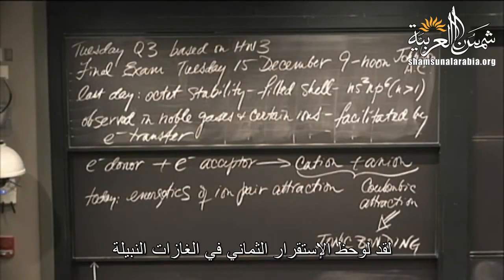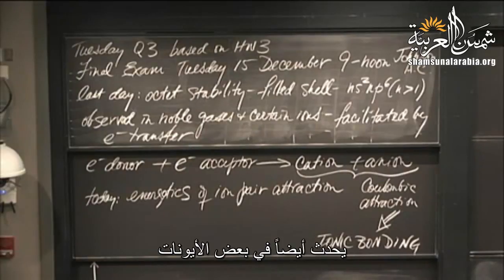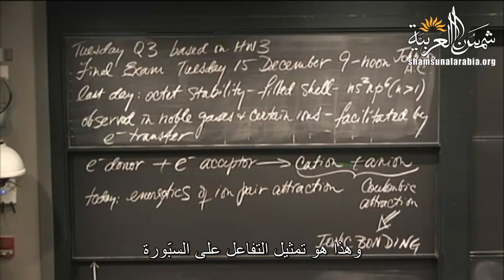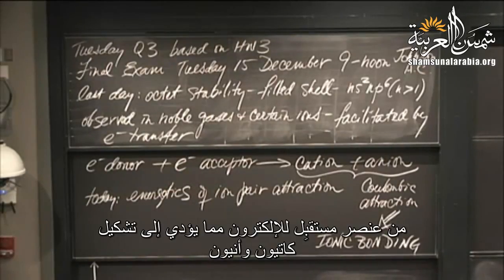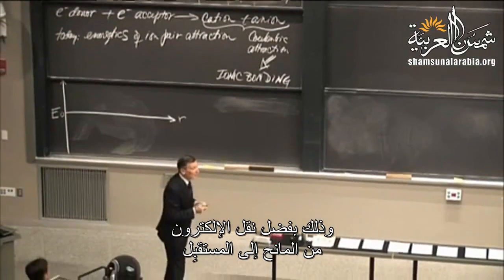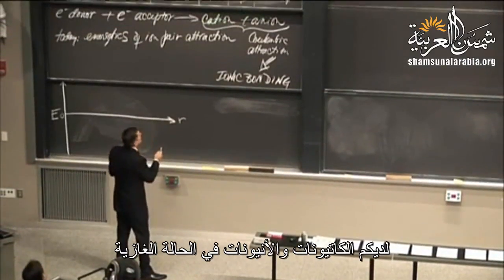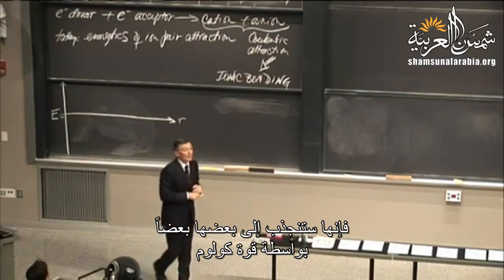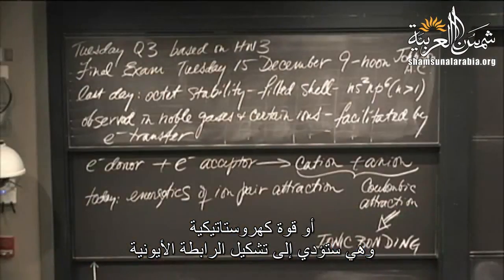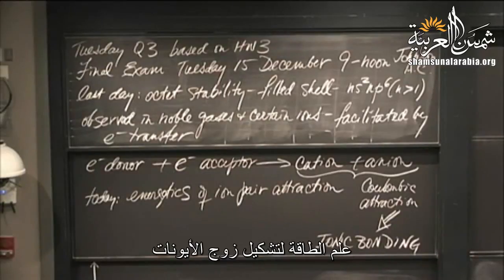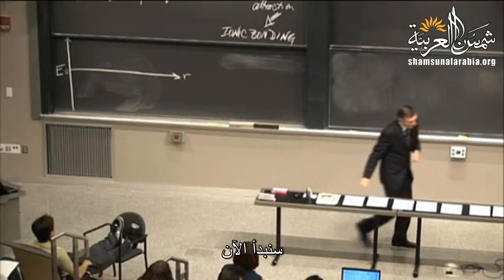Octet stability is observed trivially in noble gases, and it can also be observed in certain ions. We get to octet stability through electron transfer. The marriage of an electron donor with an electron acceptor leads to the formation of a cation and an anion, thanks to electron transfer from the donor to the acceptor. Cations and anions in the gas phase are attracted to one another by Coulombic or electrostatic forces, and that leads to ionic bonding.